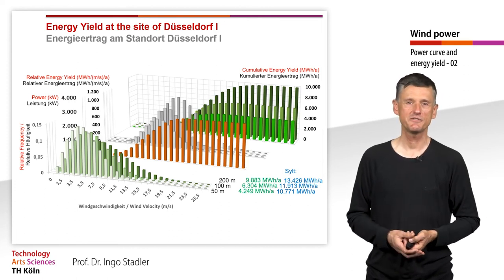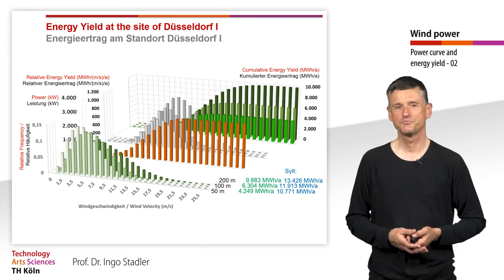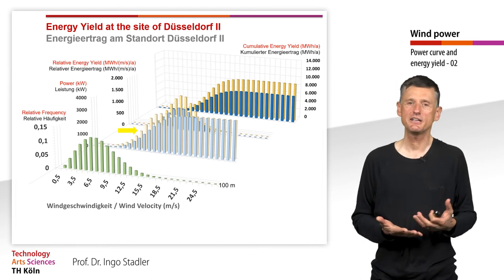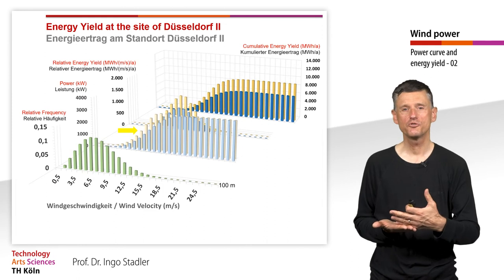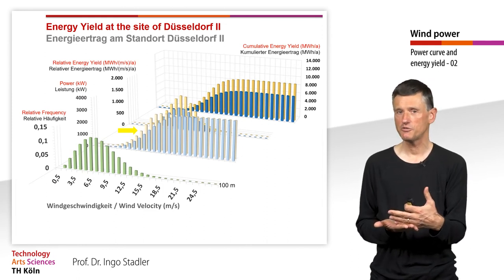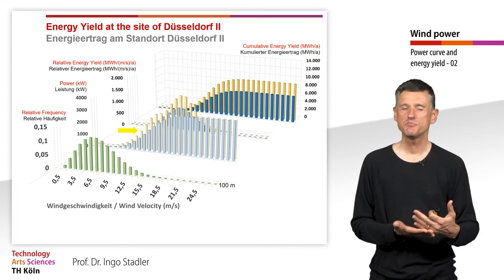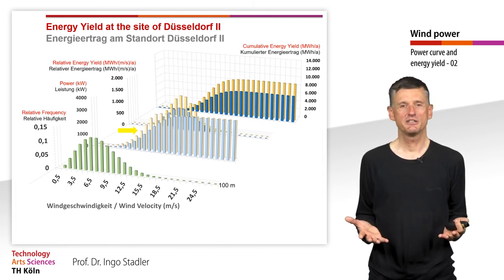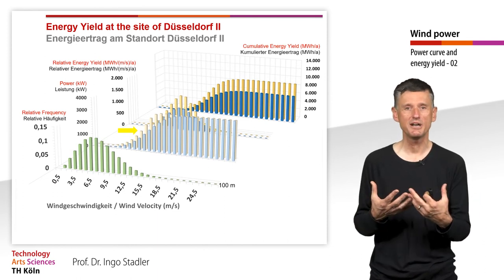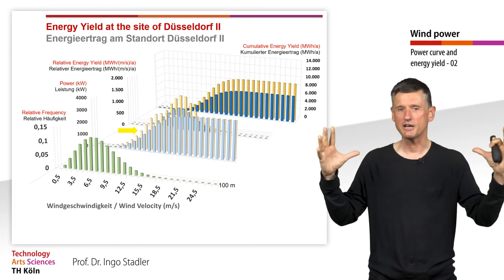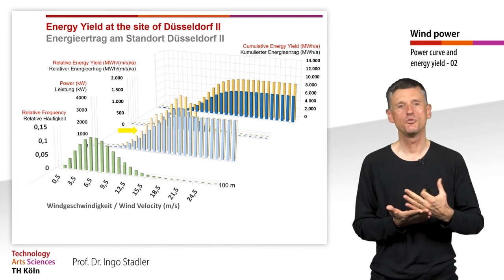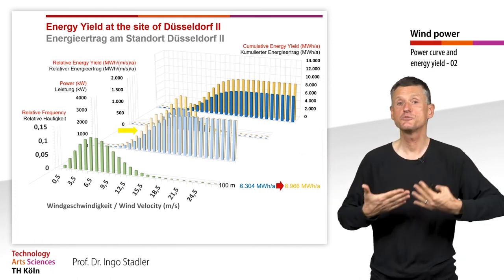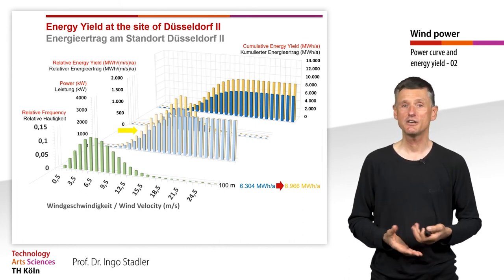The results for Düsseldorf are still not fully satisfying, so we try a second approach. We can't change the wind speed, but we can use a different wind turbine. Both turbines have the same 3 MW nominal power, but the new one has a much better power curve behavior in the steeply rising phase — not due to better efficiency, but because we install longer rotor blades. The larger rotor area means we capture more power at lower wind velocities, though this also increases costs. This design better exploits the wind conditions found at an inland site like Düsseldorf.